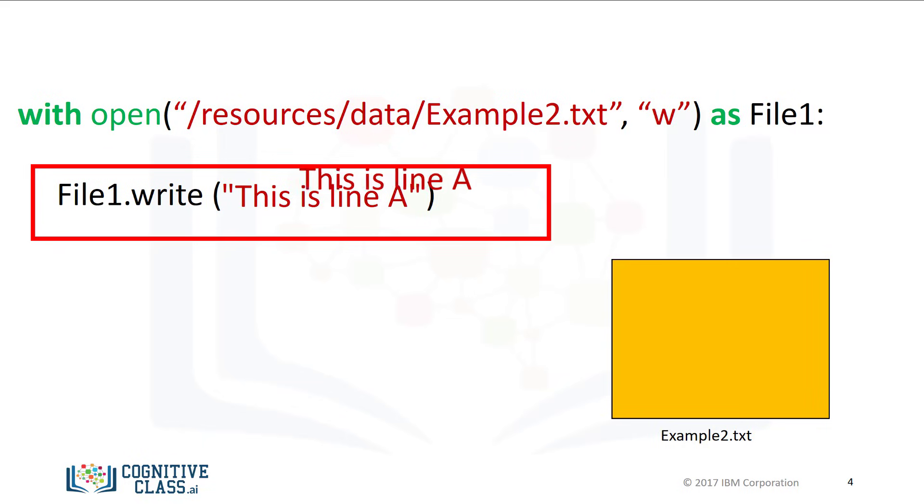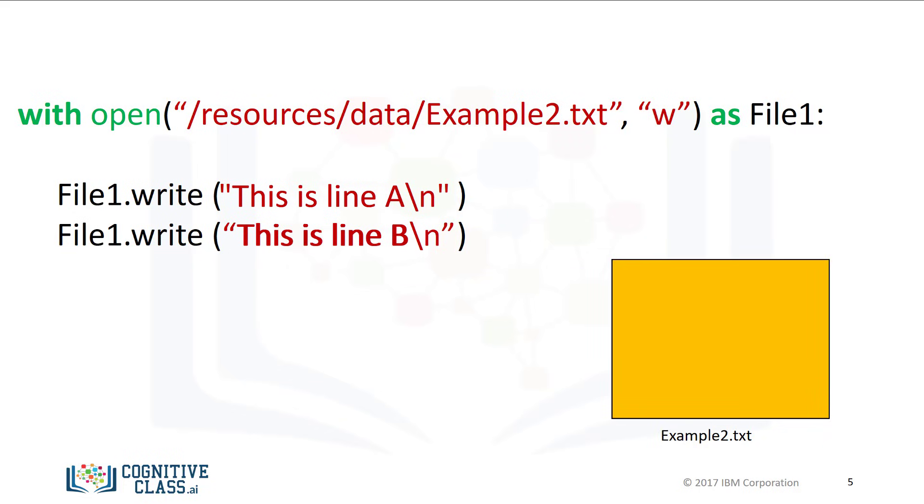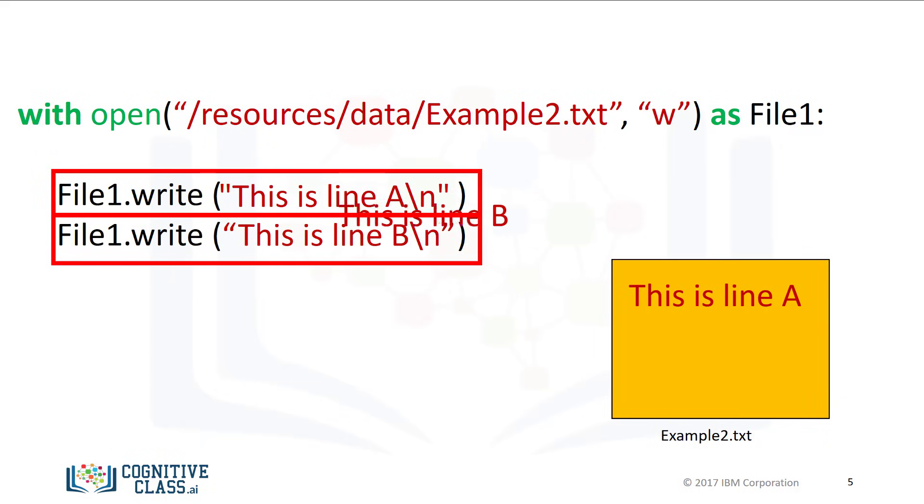We use the method write to write data into the file. The argument is the text we would like input into the file. If we use the write method successively, each time it's called, it will write to the file. The first time it is called, we will write 'this is line A' with a slash N to represent a new line. The second time we call the method, it will write 'this is line B', then it will close the file.